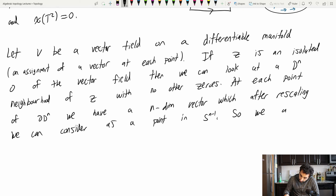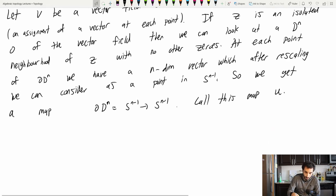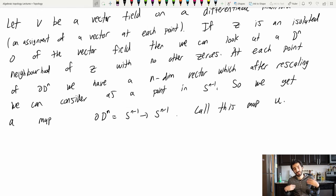And that point is unique. It only depends on the direction of the vector. The only vector you can't do this for is the zero vector. Luckily, since we are in the isolated zero case, there are no zero vectors on this little ball here. So I can assign to each point a point of the sphere. So we get a map from boundary dn, which is equal to Sn-1, to Sn-1. And we'll call this map u.